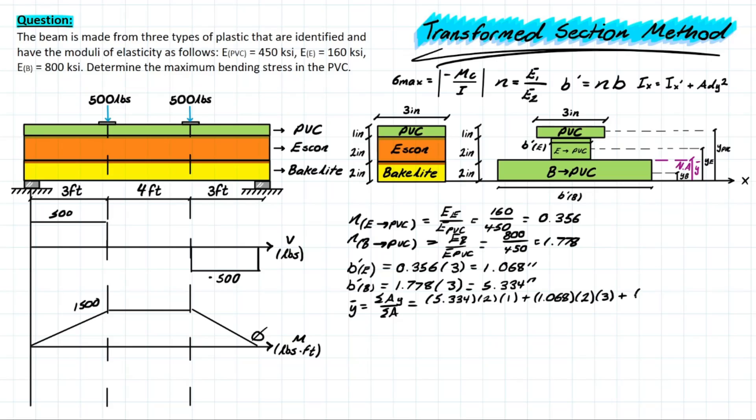And then the same for the PVC, which has not changed since it was originally PVC in the first place. So we have 3 times 1 for the height. And that distance away from X to this point is going to be 2 plus 2 plus half of 1, which is ultimately 4.5. And then we do all of this over the area. So we have 5.334 times 2, 1.068 times 2, and 3 times 1. And that will leave you with a final answer for your neutral axis of 1.93 inches.